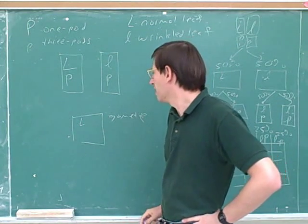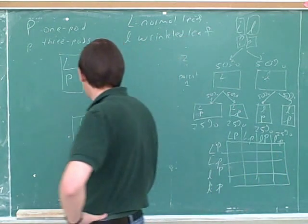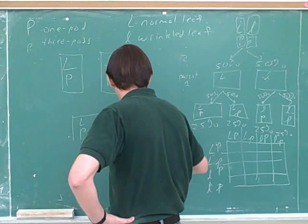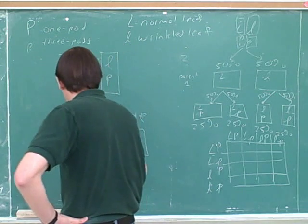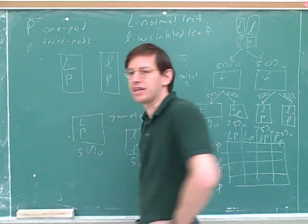A hundred percent. And what are the odds of lowercase p? Zero. So now there would only be two types of gametes.